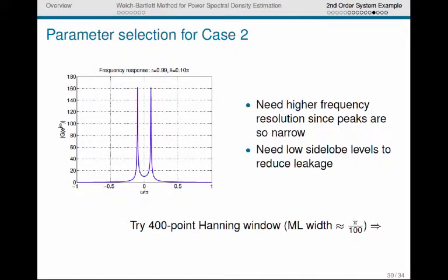We can take a look at another parameter selection for case 2. So we look at case 2. Remember, case 2 has much narrower peaks. And so we're going to need better frequency resolution. So better frequency resolution means basically we have to choose a longer window, because a longer window will result in a narrower main lobe. So we'll try a 400-point Hanning window, which has a main lobe width of about pi over 100. So hopefully that should be enough to resolve these very narrow peaks. We'll use the Hanning because we know we need the side lobe rejection that it provides.